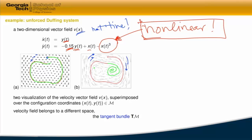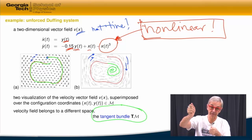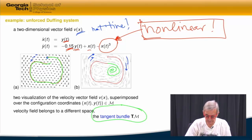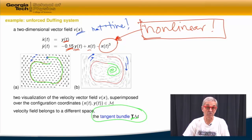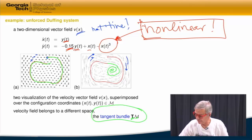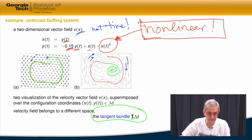The more formal way of describing what these vector fields are is to call them a tangent bundle. You have a state space of all possible states specified by d numbers — like the weather in Chicago specified by a million numbers. At every state point, you have a law of motion that tells you which way you'll go. That's another vector of the same dimensionality, tangent to the trajectory, and the collection of all these vectors is called the tangent bundle.